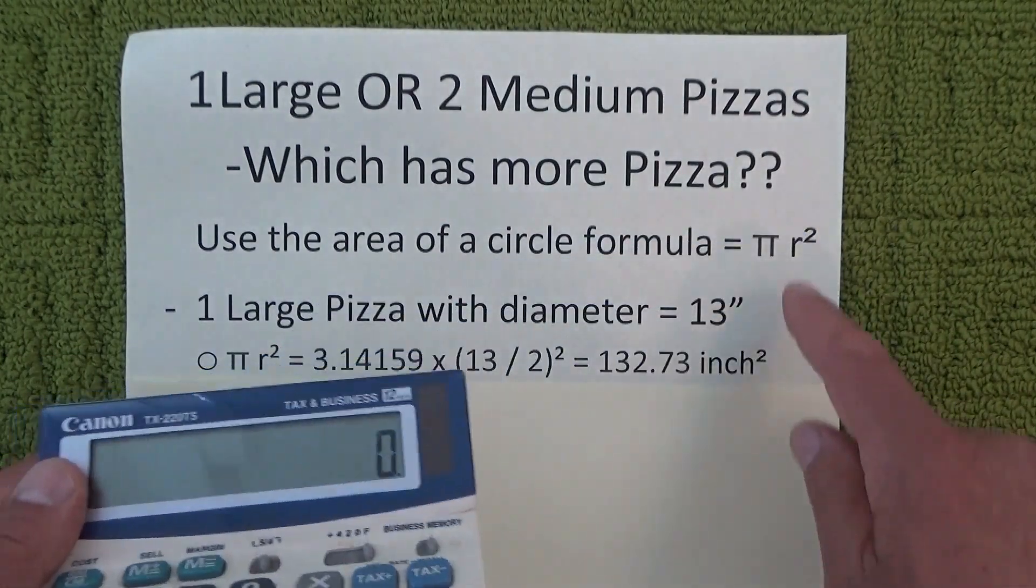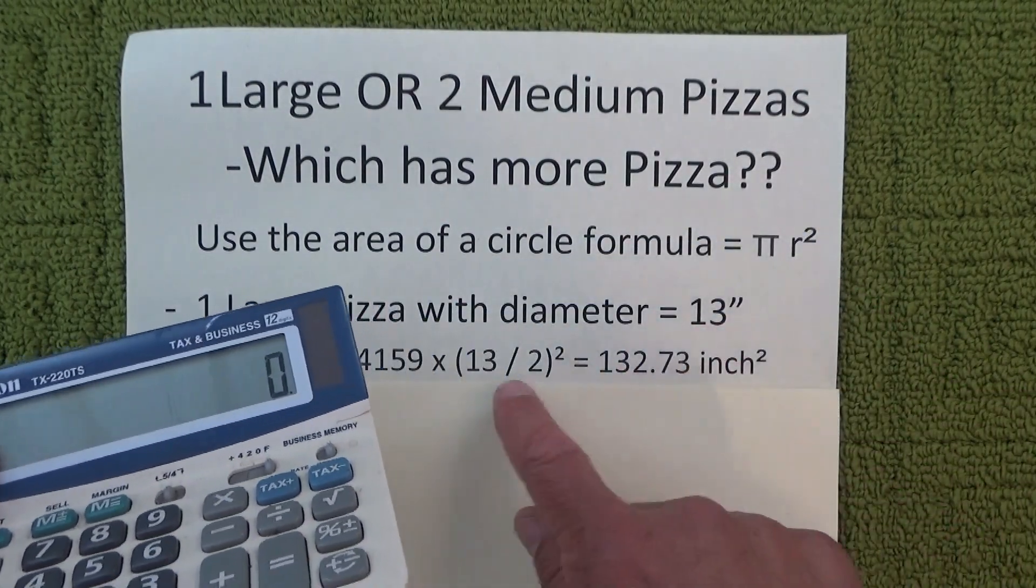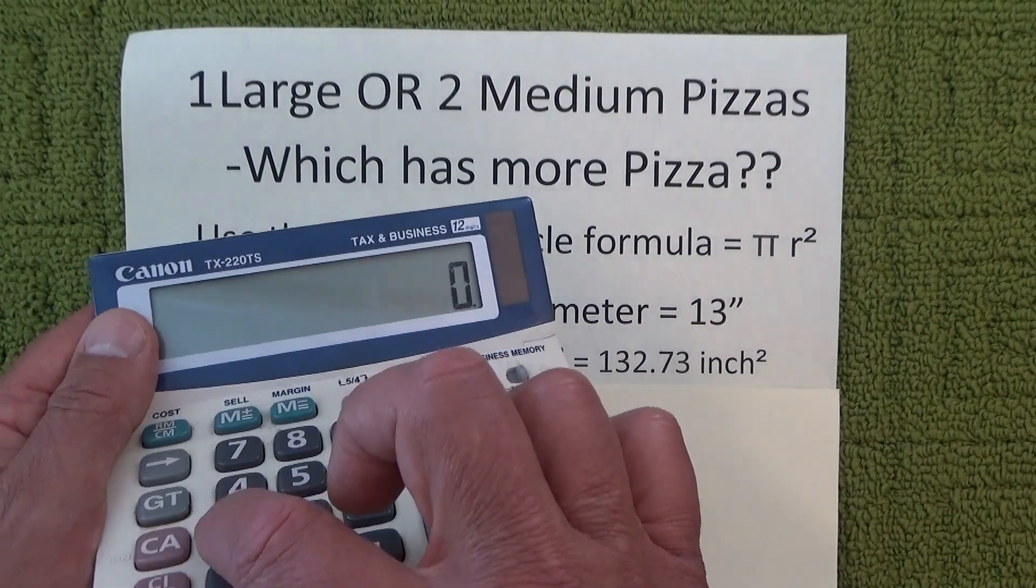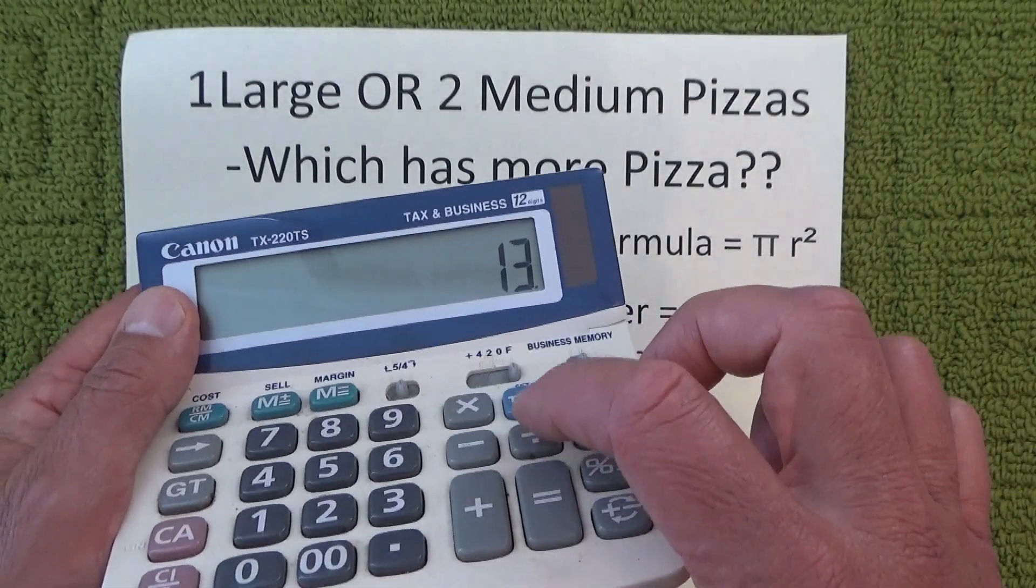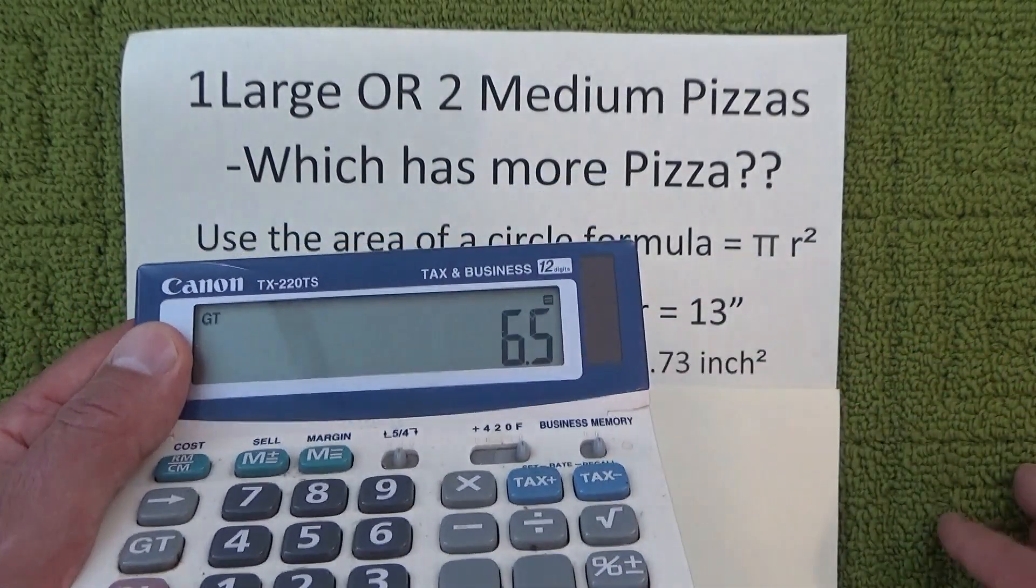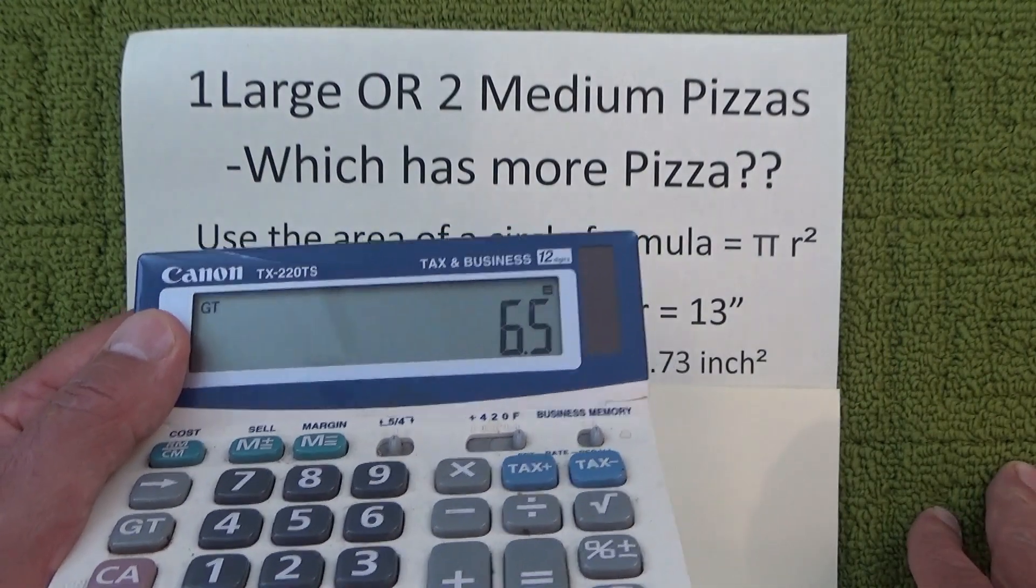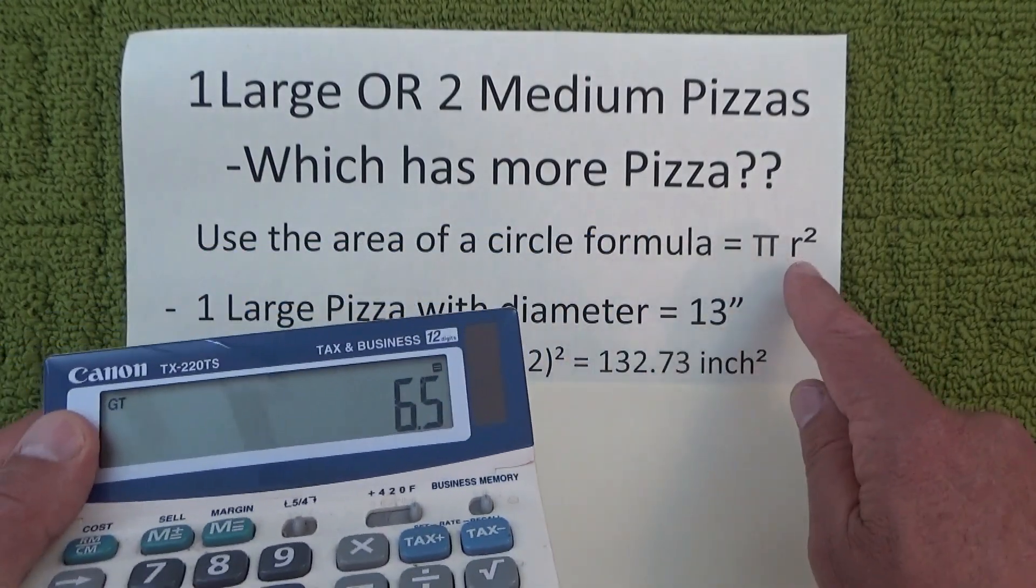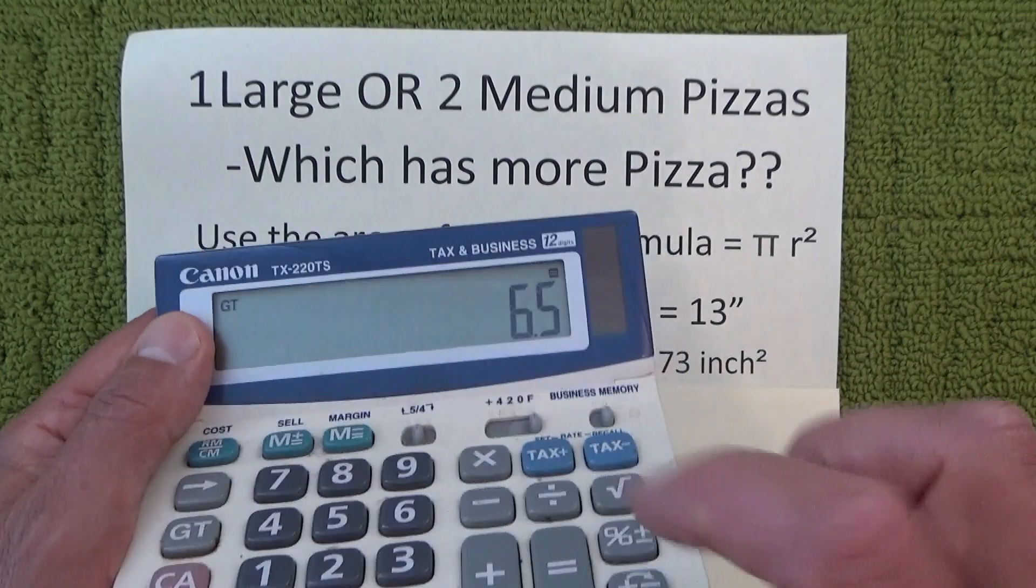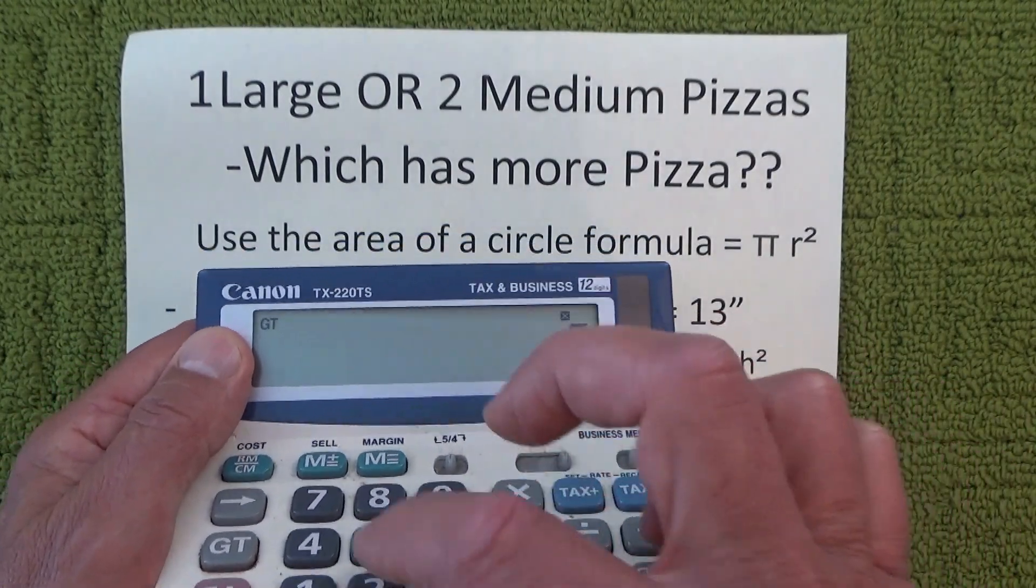So the first thing to do is take the 13 inches diameter and divide that by 2, which gives us the radius. So that's 6.5, and we need the radius squared, so it's 6.5 times 6.5.